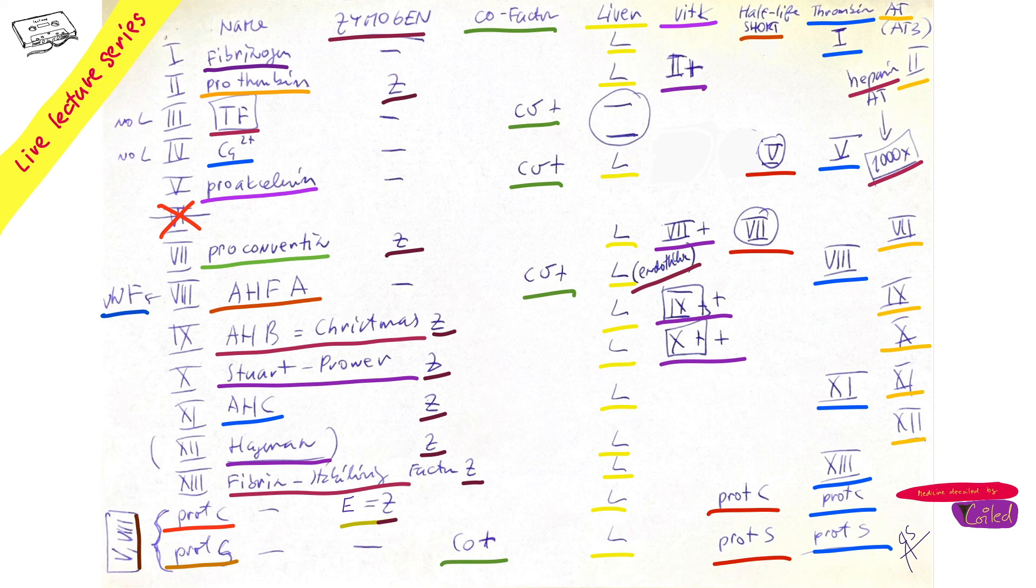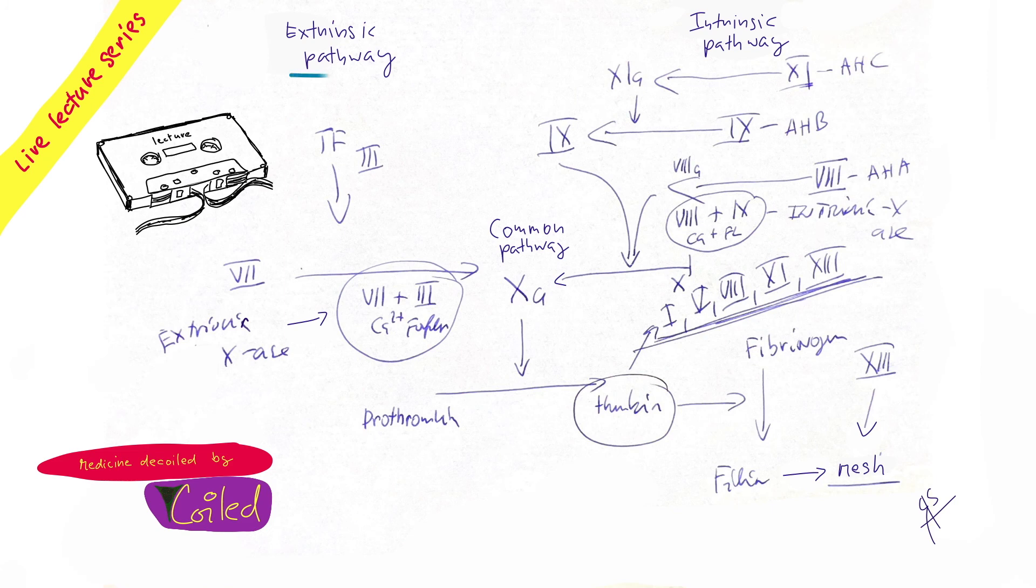And very simply, let's get to the coagulation cascade. So how is it? There is an extrinsic system cascade, intrinsic cascade. There is a common one over here. Common is made by which factor? Ten. This is prothrombin, leads to thrombin, and thrombin cleaves fibrin and this makes a mesh. But thrombin also activates all the factors I told you: one, five, eight, thirteen. And factor thirteen over here stabilizes the mesh.